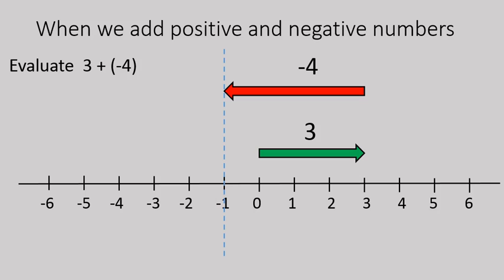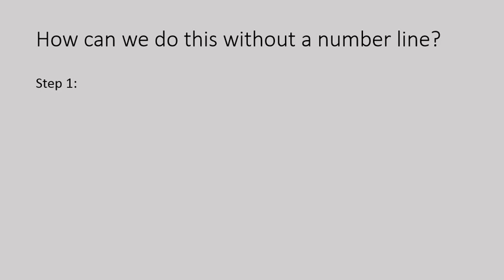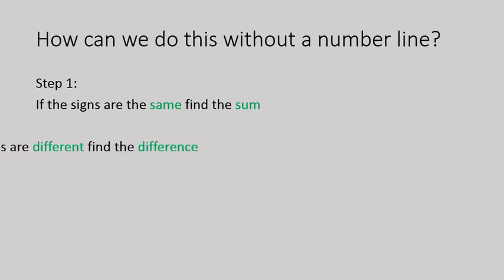So with this type of question, we would follow the rules. Without a number line, this is what you do: if the signs are the same, you find the sum — you add the numbers together and take the sign that is the same. A positive plus a positive gives you an even bigger positive, and a negative plus a negative gives you an even bigger negative.